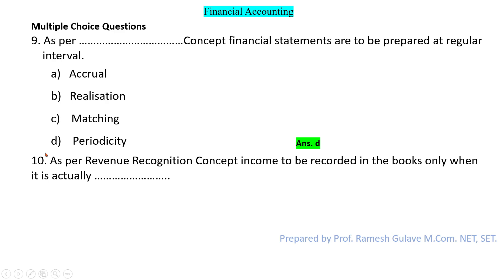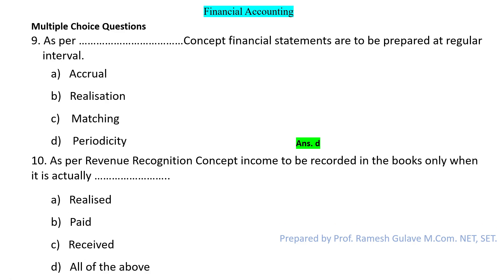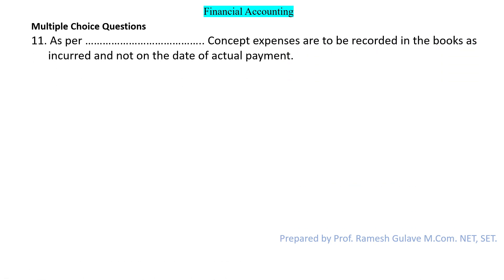The next question says: as per the revenue recognition concept, income is to be recorded in the books only when it is actually realized. Revenue should be recorded only when actually realized — otherwise it should not be recorded. So here option A is the right answer.